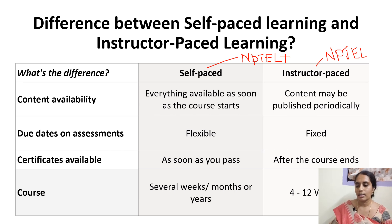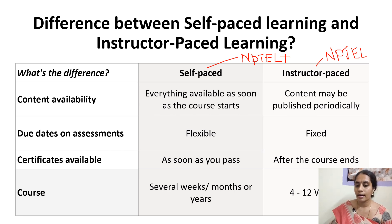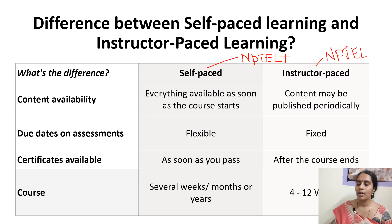In instructor-paced learning (NPTEL), content is released periodically — every week you get new content, and you submit assignments before the due date. Whereas in self-paced learning, the full content is available at once in that particular course, and you can write the assignment at whatever time you have. There is no restriction that you need to submit the assignment before a due date — no restrictions apply in self-paced learning.